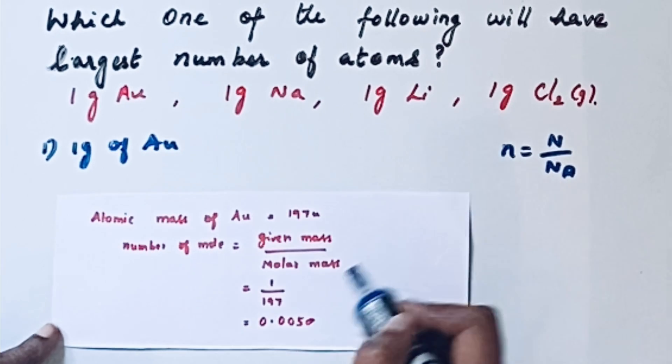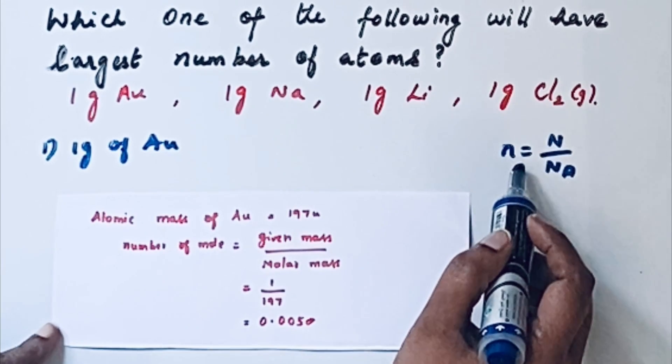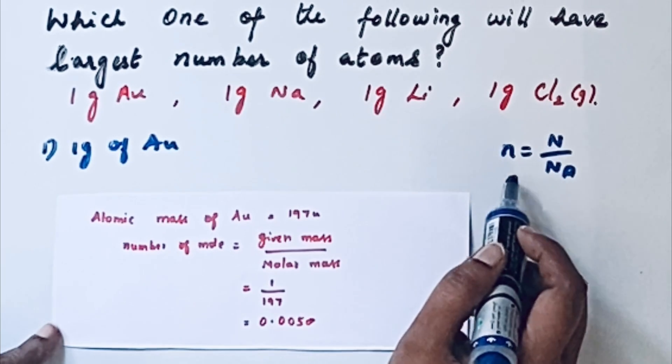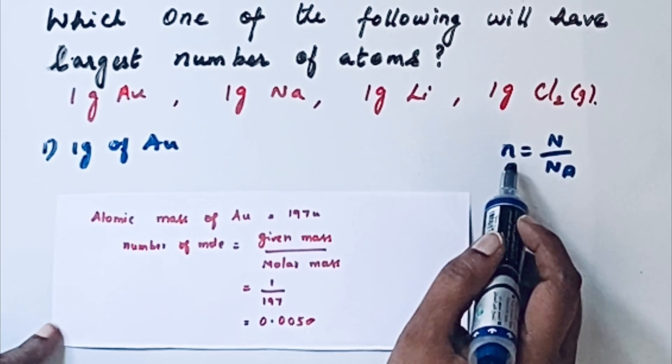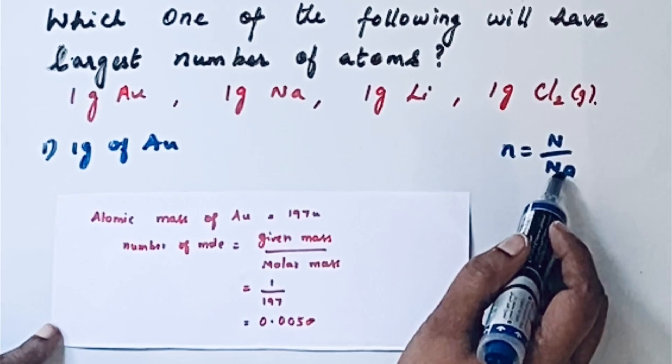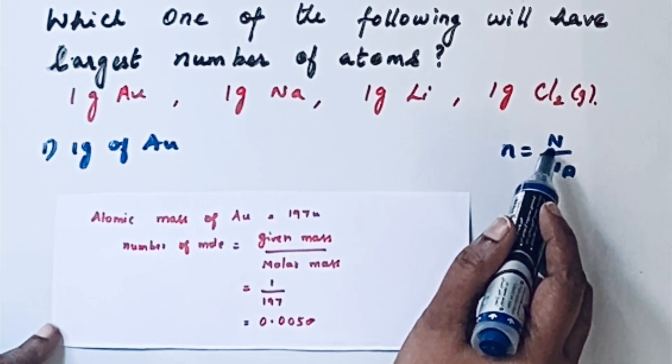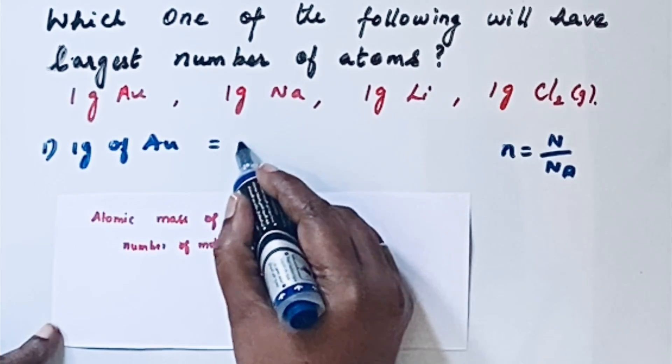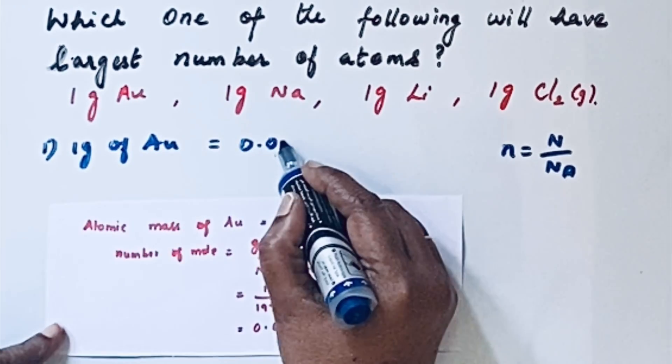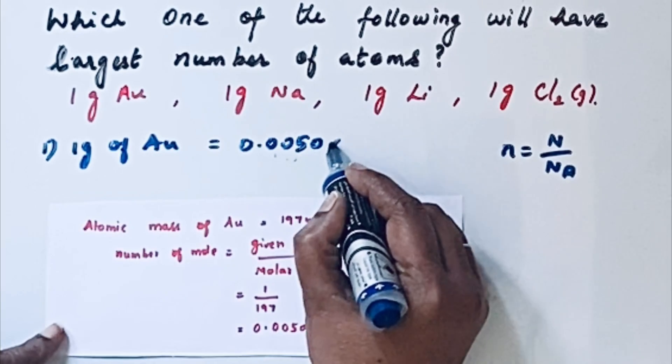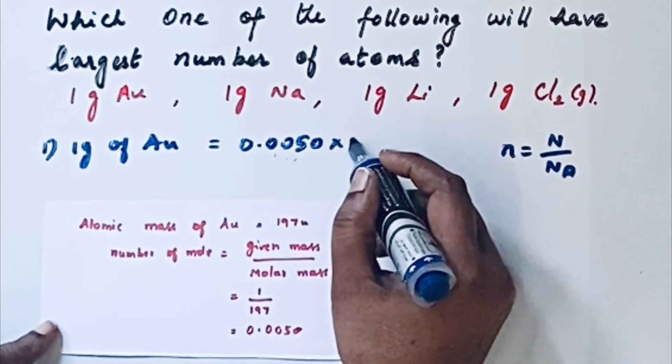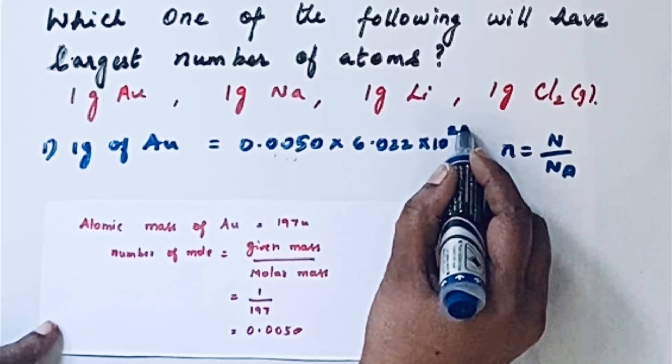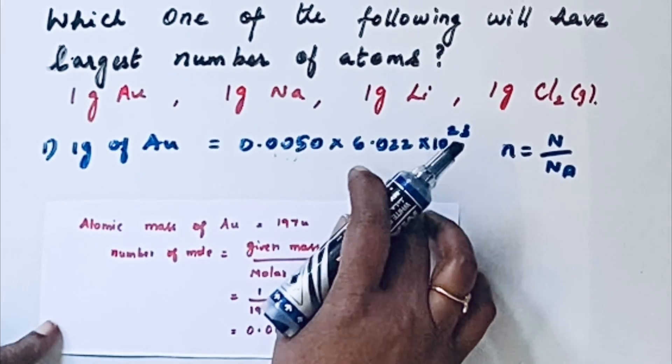Once we got the number of moles, then we have the second formula: number of particles by Avogadro number. Avogadro number is a constant. So if you substitute, you will get the number of particles. For 1 gram of Au, number of moles is 0.0050 times Avogadro's constant, 6.022 times 10 to the 23. So this is for gold.